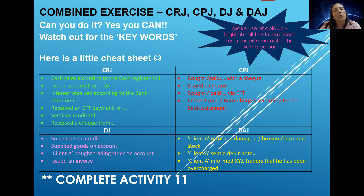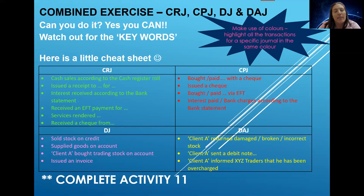What you must be able to do, now that we are finished with the CRJ, DJ, and DAJ — with all the payments by debtors, the sales to debtors, and the returns by debtors — is to put all of this together. So if I give you a combined exercise with transactions that must be recorded in the CRJ, the CPJ, DJ, and DAJ, you must be able to identify which journal a specific transaction belongs to.